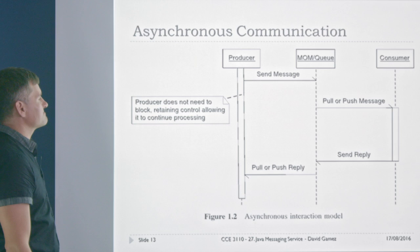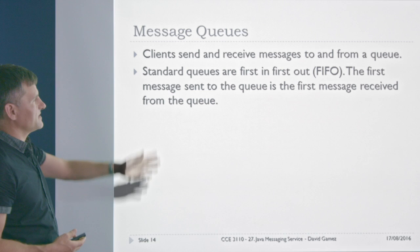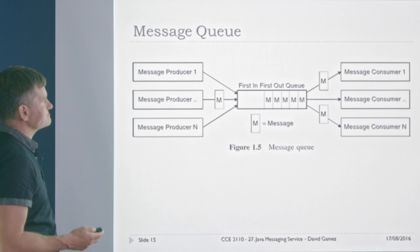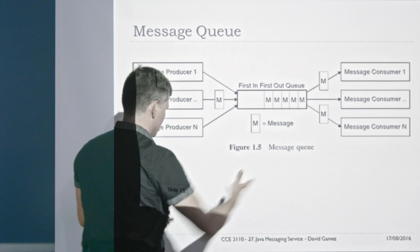Message-oriented middleware is based on queues. Clients send and receive messages to and from queues, which are first-in first-out. The first message sent to the queue is the first message received from the queue. You have a bunch of producers sending messages to the queue and consumers pulling messages from the other end — like any queue in a bank.